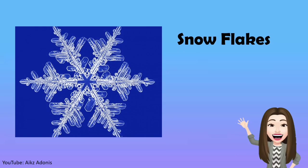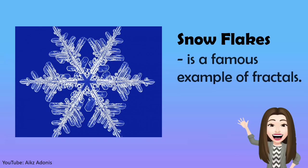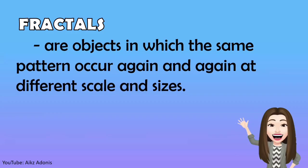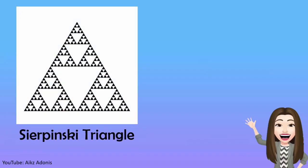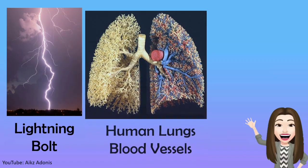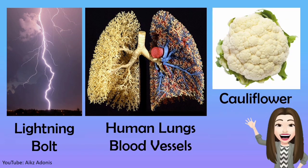Can we consider a snowflake as an example of six-fold symmetry? Of course, yes, because it contains six folds of symmetrical figures. But did you know that a snowflake is also a famous example of fractals? Fractals are objects in which the same patterns occur again and again at different scales and sizes. Other examples of fractals are the Sierpinski triangle, ferns, lightning bolt, human lung vessels, and cauliflower.